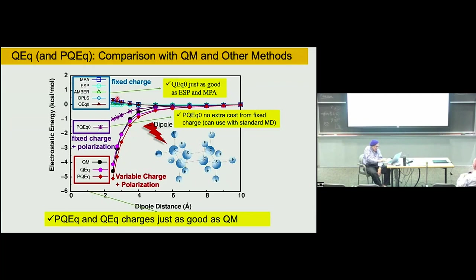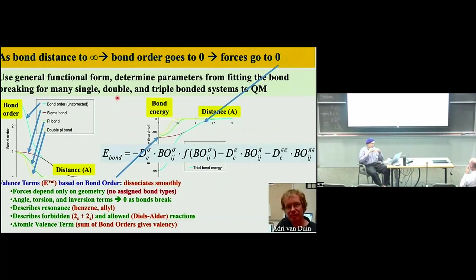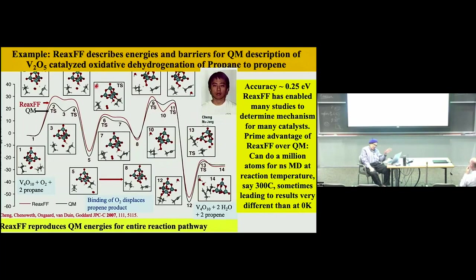The bonds break, and we have an expression for how the bond order depends on distance and how the bond energy depends on bond order. The accuracy of these reactive force fields is not quite as good as quantum mechanics: quantum mechanics can be as good as 0.05, more typically 0.1 eV; reactive force fields are more about 0.25 eV. The advantage is we can do the reaction at 400 degrees Celsius, which is what the experiment requires, and we find results very different from what quantum mechanics at 0 Kelvin would predict.